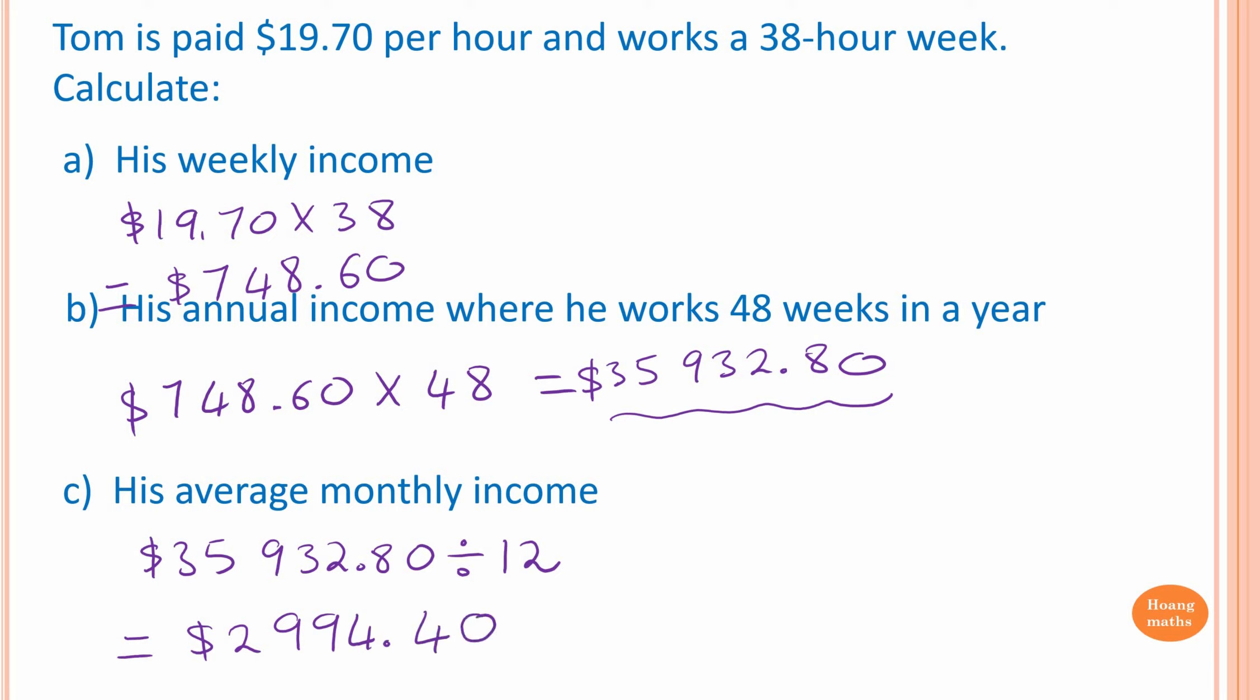Now remember, with money, we must write two decimal places. So 0.4 means $0.40. Thank you so much for watching.